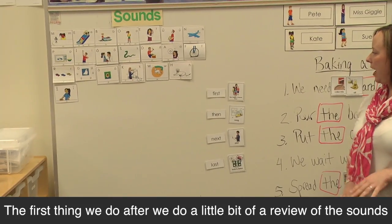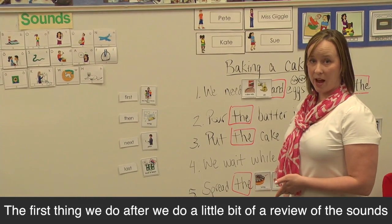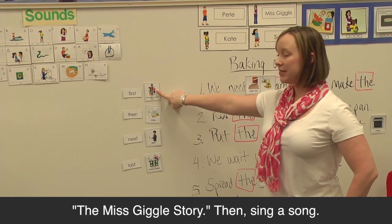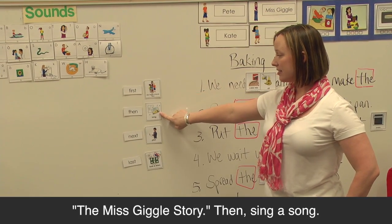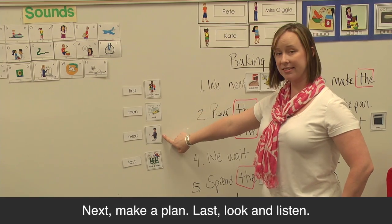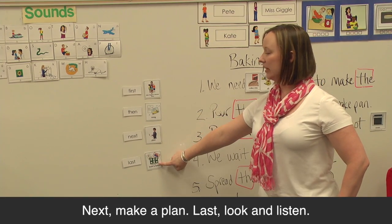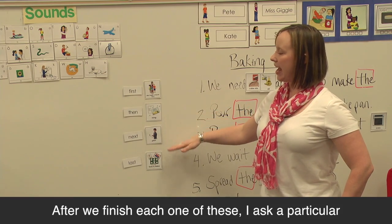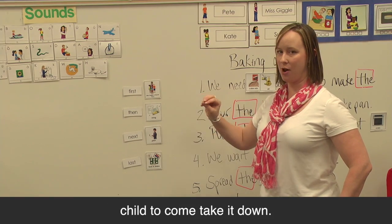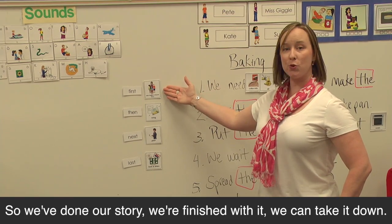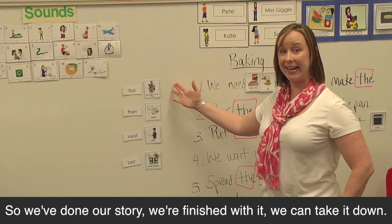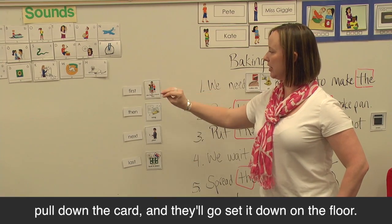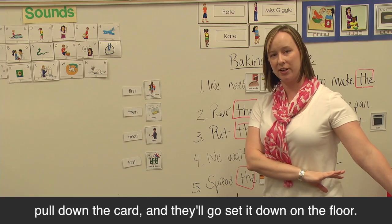The first thing we do after a quick review of the sounds is the children tell me what we're going to do first. The Miss Giggle story, then sing a song, next make a plan, and last look and listen. After we finish each one, I ask a particular child to come take it down. We've done our story and we're finished with it, so I ask one child to come up, pull down the card, and set it on the floor.